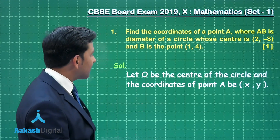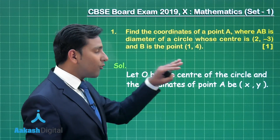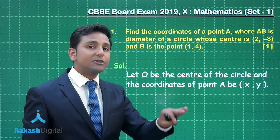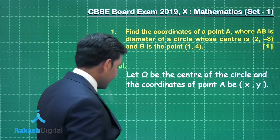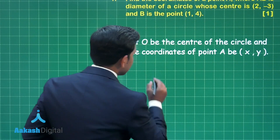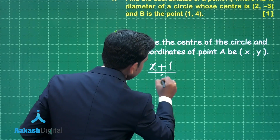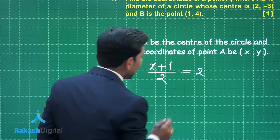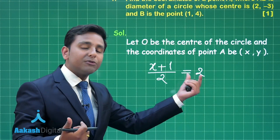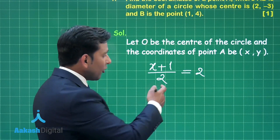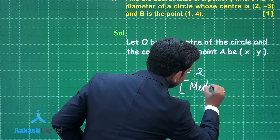Let O be the center of the circle, and let the coordinates of point A be (x, y). Applying the midpoint theorem: (x + 1) / 2 = 2, that means x₁ + x₂ divided by 2 equals the x-coordinate of the midpoint of the given line segment, obtained using the midpoint theorem.